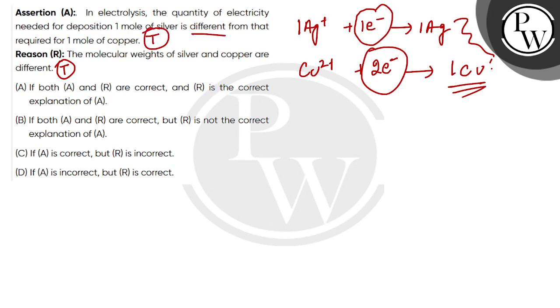So, the reason and the assertion are both true. But the reason doesn't explain exactly why the assertion is correct. Because of this, the exception is correct. The other one will be incorrect. I hope you understood. Thank you.